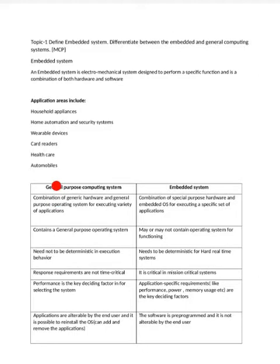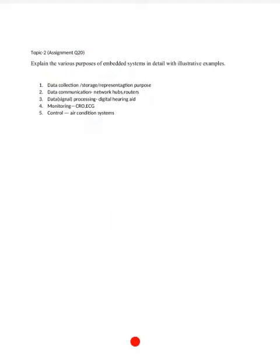When I gave examples of embedded systems, I gave examples based on different applications. When you see healthcare, one example is the ECG machine. What is the purpose of the ECG machine? It will just monitor the heart rate. It has a few sensors — from the sensors it reads the heart rate and displays it. Here we will discuss the various purposes for which embedded systems are designed.